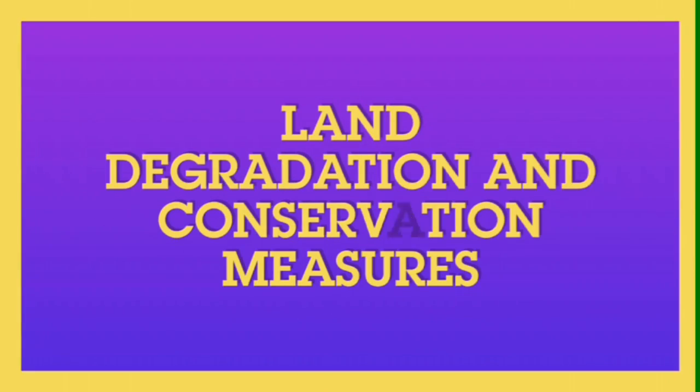In net sown area, if you look at Punjab, more than 80% of the land is cultivated. However, in states like Mizoram and Manipur, less than 10% of the land is under cultivation.